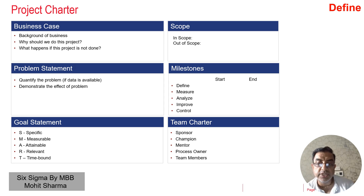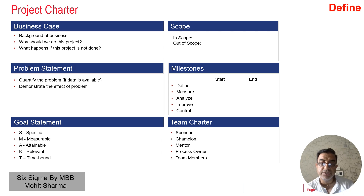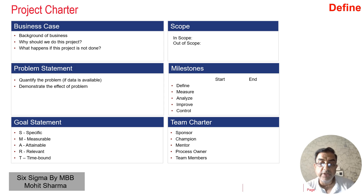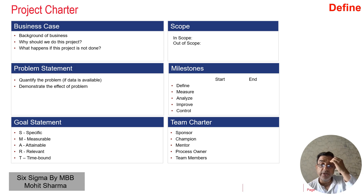The project champion is the person who leads the project, and the black belt or green belt assists the champion to achieve the project goal. Six Sigma resources will use their technical and analytical skills to help the champion achieve the goal. The mentor would be a quality person — a master black belt for a black belt project, or a black belt for a green belt project. The process owner is the person whose process the goal is defined on, and team members help with brainstorming, data collection, root cause identification, and implementing solutions in the improve phase.